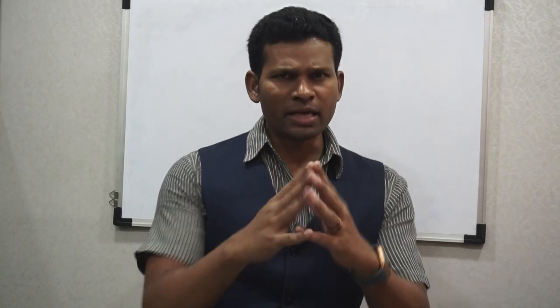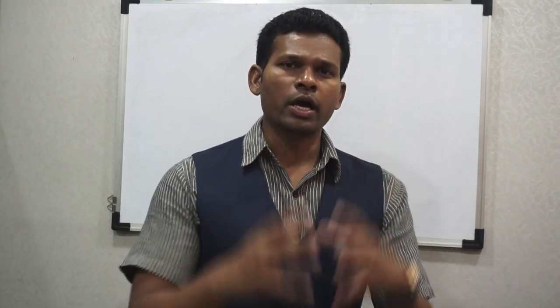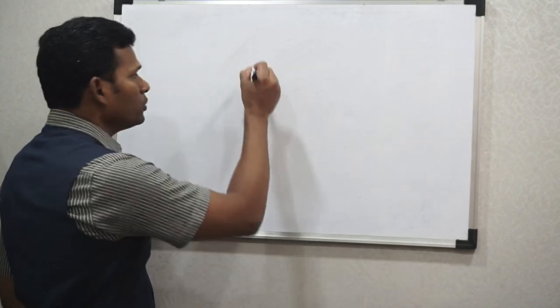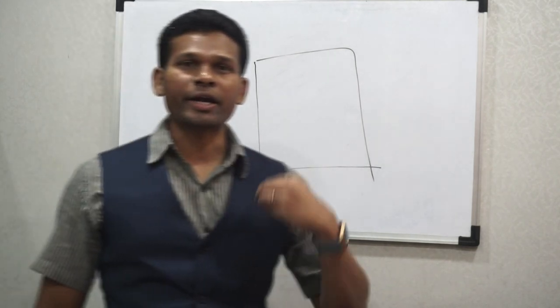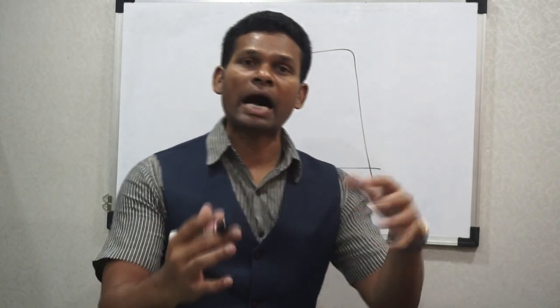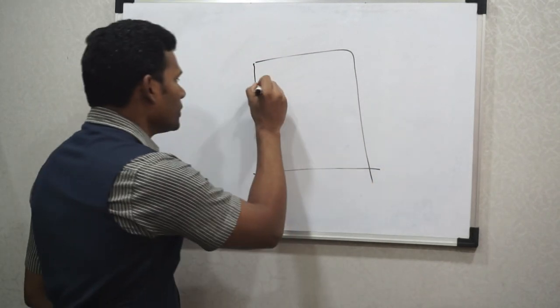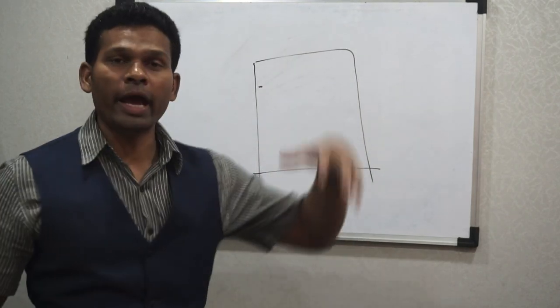Today we are going to do some trait analysis — how exactly you can analyze somebody. Today's topic is the baseline. In baseline analysis, we understand how a person writes on ruled paper and what that reveals about their thought process. Let's assume this is a page — the moment you start writing on a blank page, you start somewhere and end somewhere.